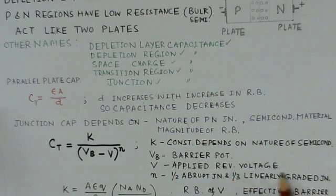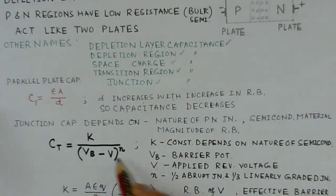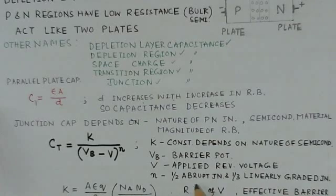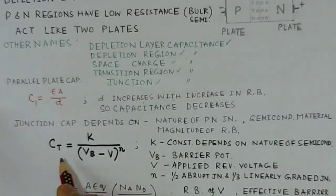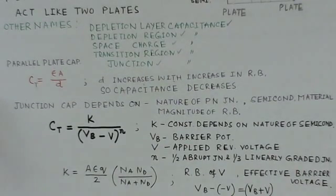V is the applied reverse voltage. Here it is minus V, so applied reverse voltage is negative, so it will make it positive. N is equal to 1.5 for abrupt junction and 1.3 for linearly graded junction. So from this relation you can calculate the value for the junction capacitance.